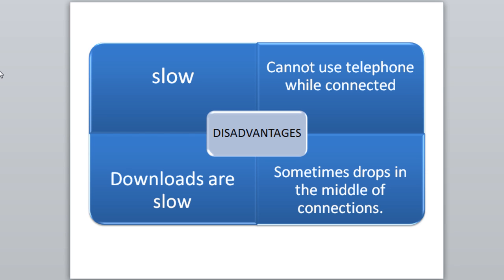Another disadvantage is downloads are very slow — dial-up runs at about 56 kilobits per second, so downloading a song or game could take around 12 minutes, which is ridiculously slow. Also, dial-up sometimes drops in the middle of a connection — it may disconnect when somebody picks up the phone or just drop without warning. Anyone still on dial-up, it's time to upgrade to DSL, fiber optic, or 4G.